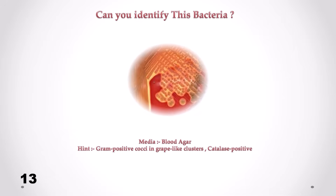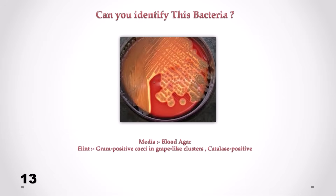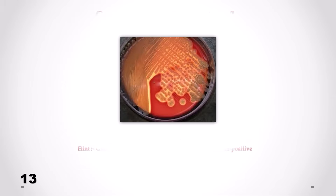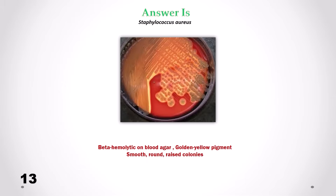Can you identify this bacteria? Correct answer is Staphylococcus aureus. We can see beta-hemolytic on blood agar, golden yellow pigment, smooth round and raised colonies.